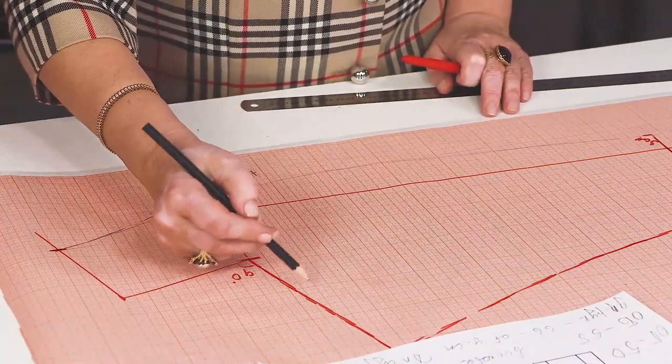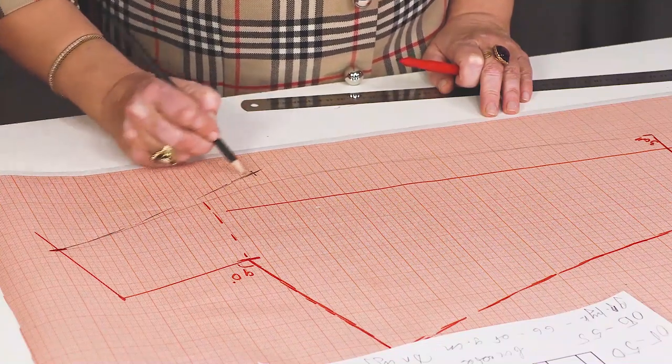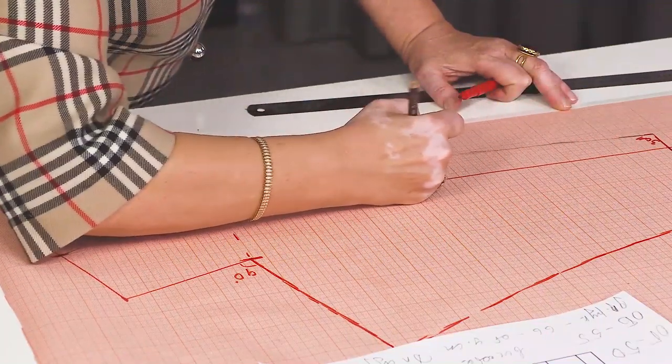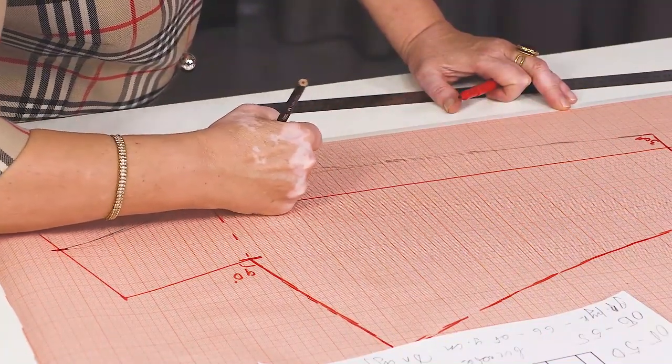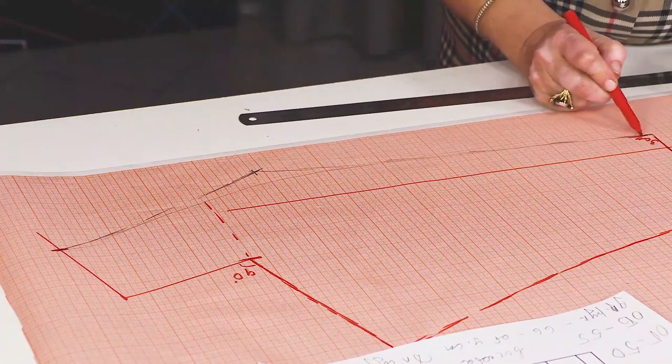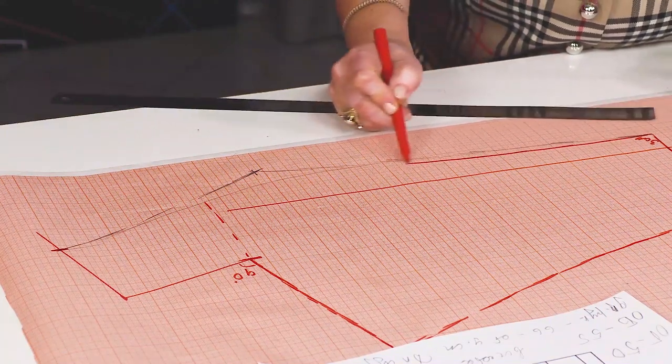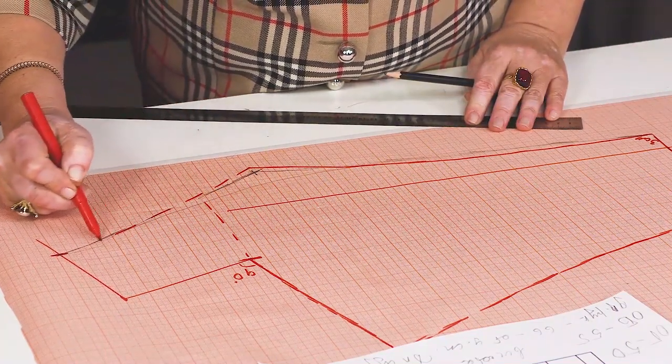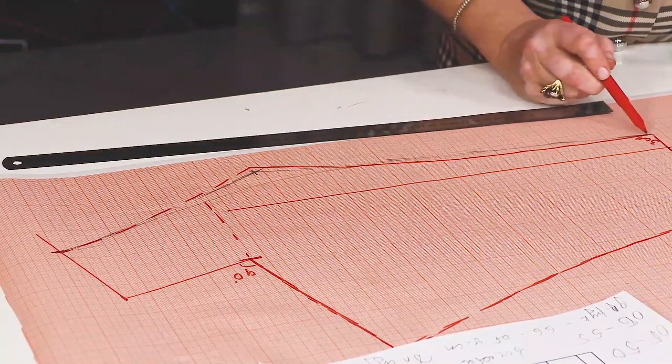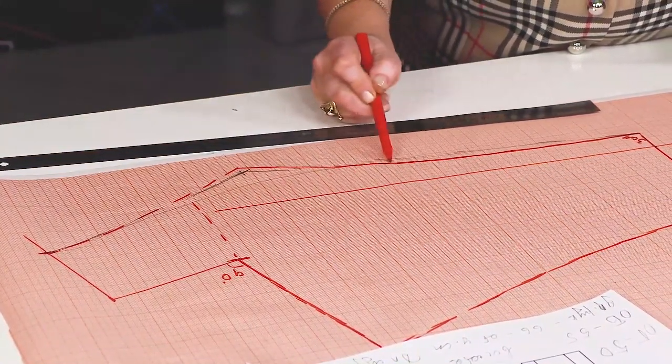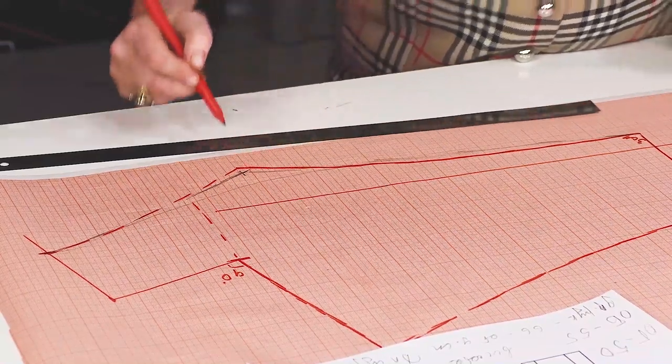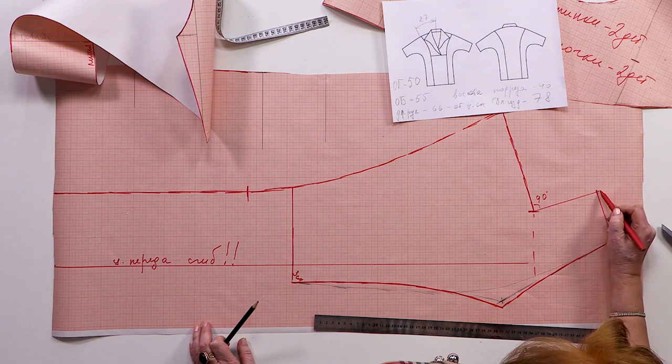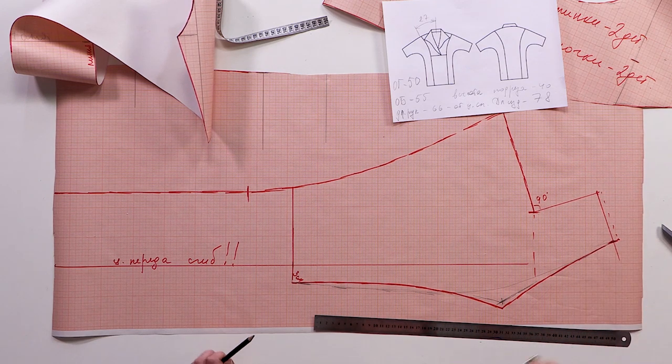I want it to look just like the one in the sketch. Watch the way I'm drawing the collar. Do not forget to add 1 cm for the seam allowance here.